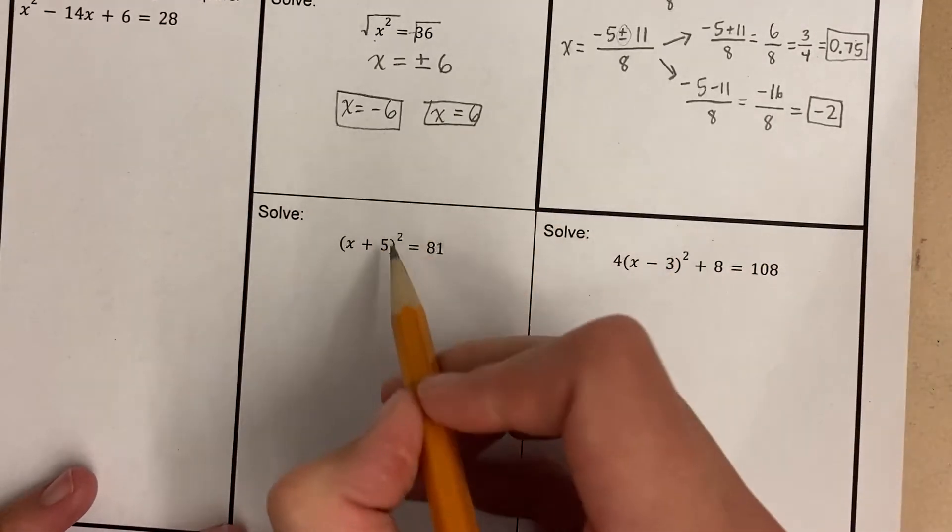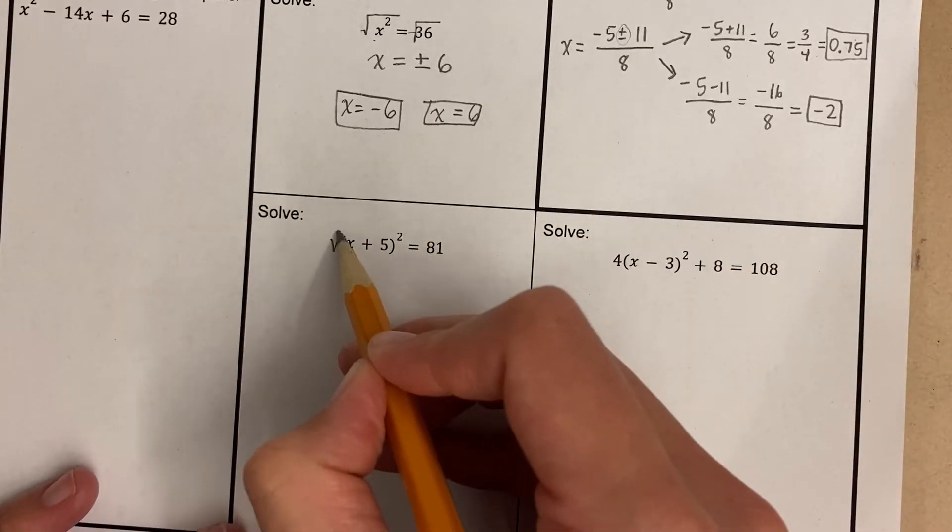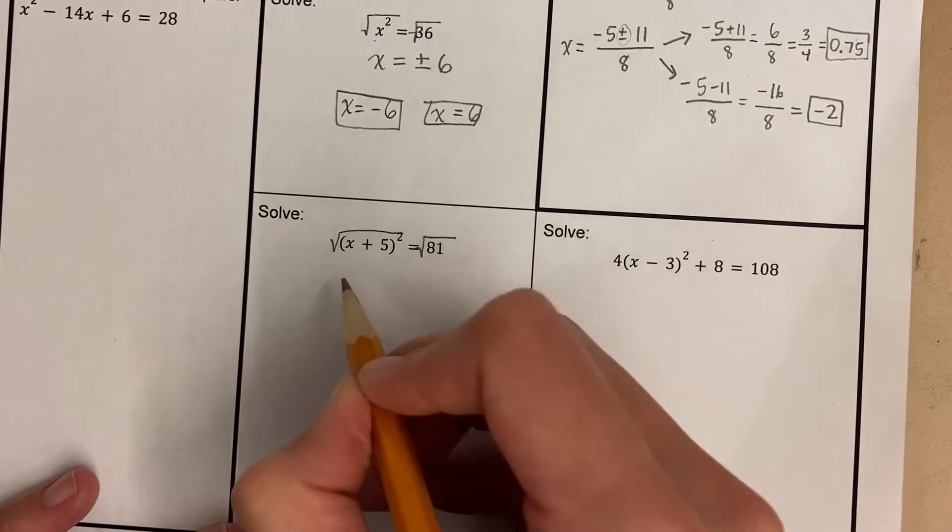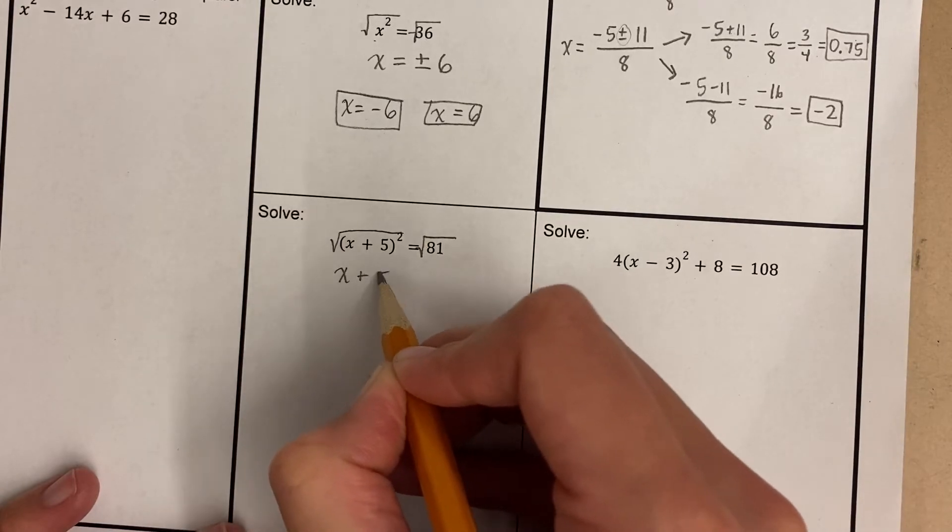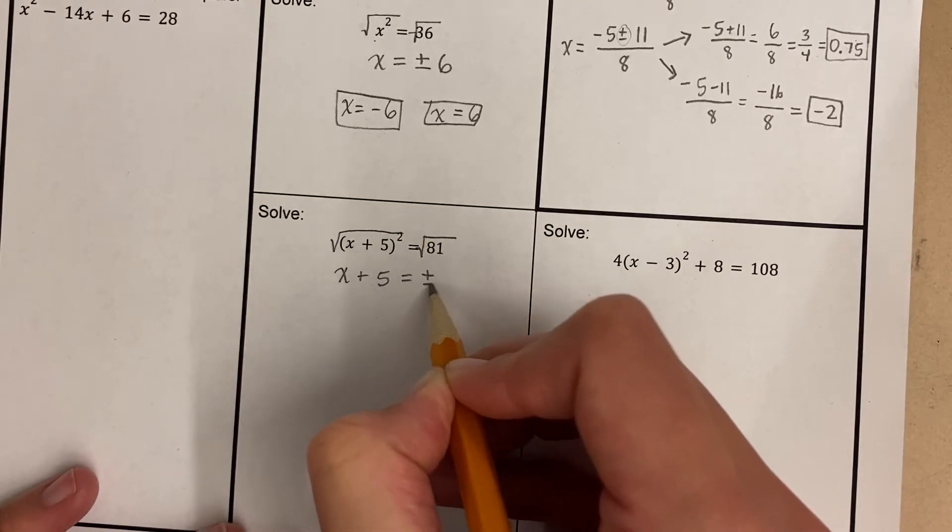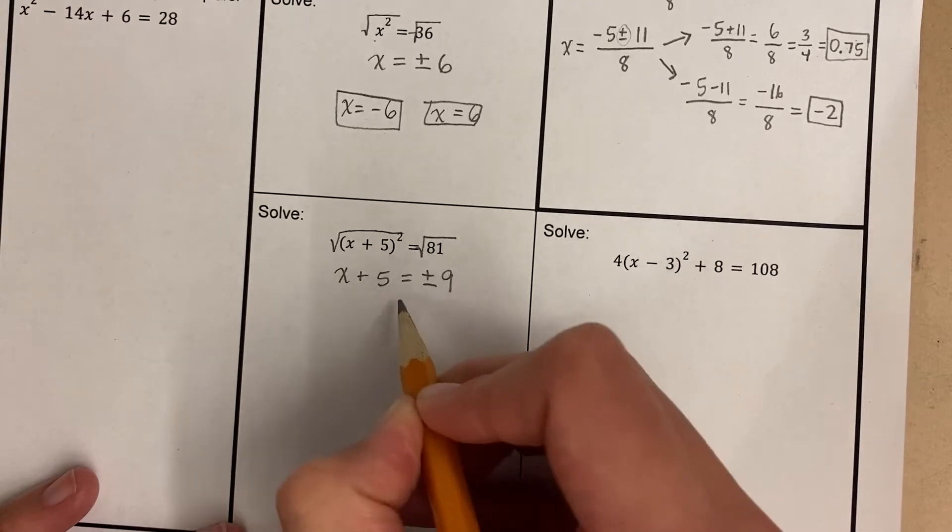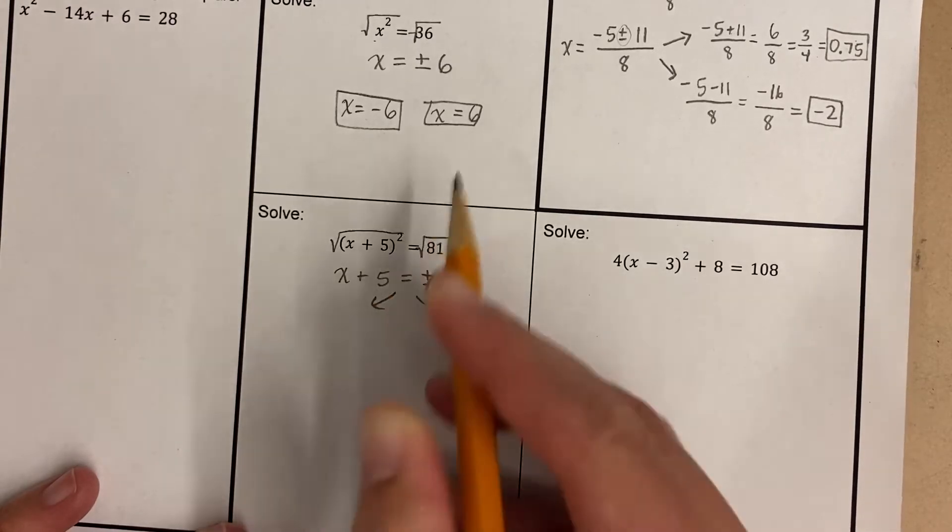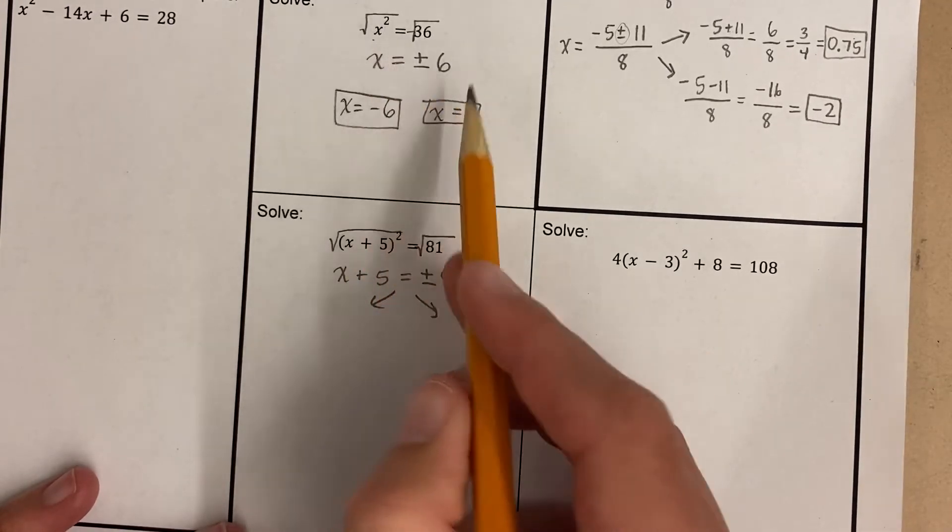Now the same thing happens here. I have something being squared, so I say, oh, let me do the opposite of squared. I'm gonna square root. And the same thing happens, which is when I square root, I have two answers. In this case, the square root of 81 is plus or minus 9. Now, it just so happens that x here was by itself, so I was done. Here, x is not by itself, so I have to keep on solving.